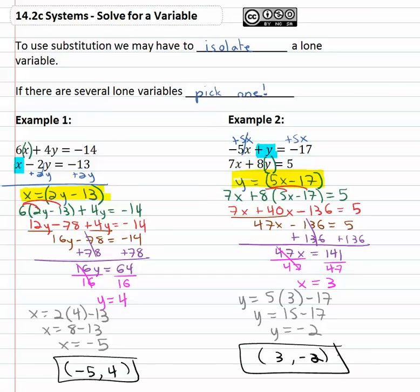If we don't have that lone variable, we can solve for it, get it alone, and then make the substitution we need to make.